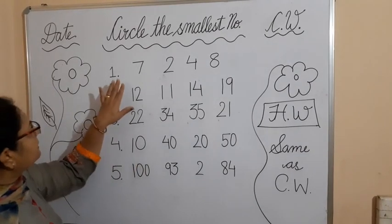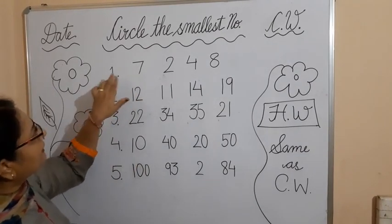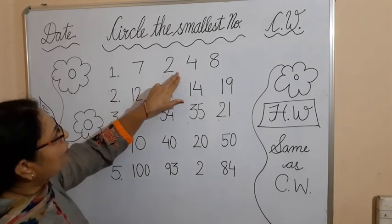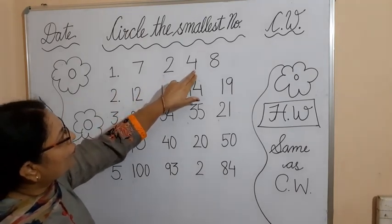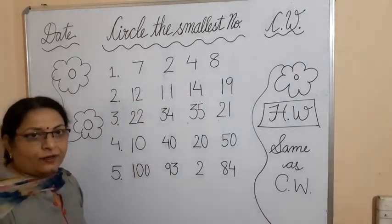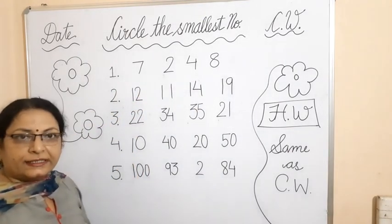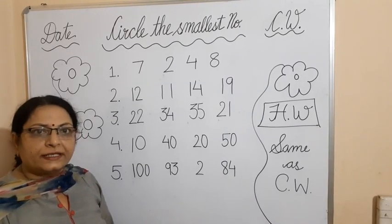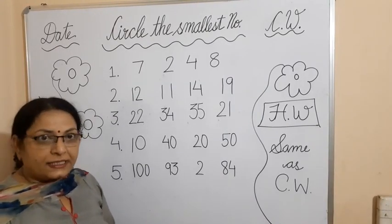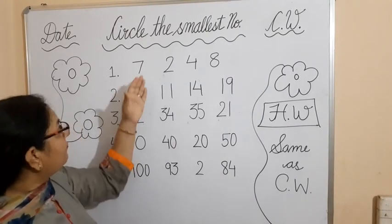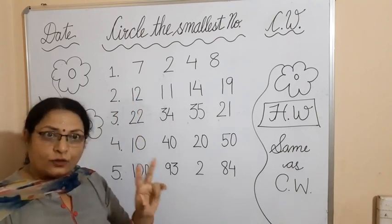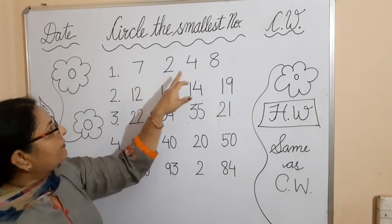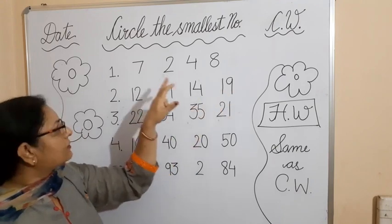So the first example is: write down the numbers 7, 2, 4, and 8. Have you written the numbers? Then how will you compare them? First of all, see whether the numbers are single digit or two digit. In my first example I have given only single digits: 7, 2, 4, and 8.